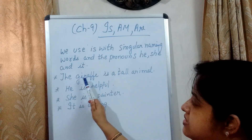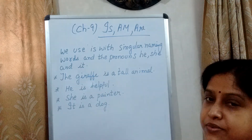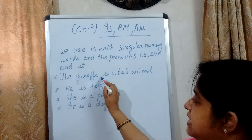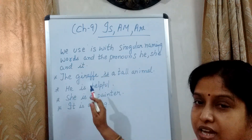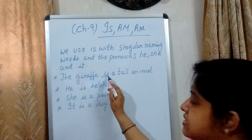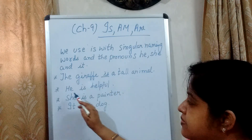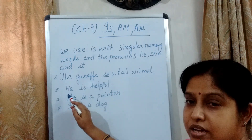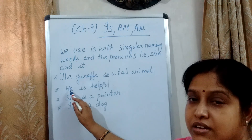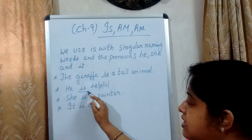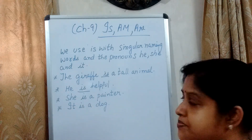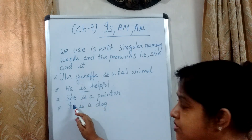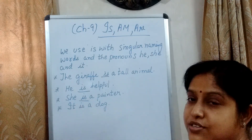For example, the giraffe is a tall animal. Giraffe kya hai? Animal hai. To ye is yahan pe singular hai — giraffe ek hai, to yahan pe is ka use hua hai. He is helpful. He yaani boy, so he is a singular pronoun, then we have used is here. She is a painter — she also is a singular pronoun, so is is used here.